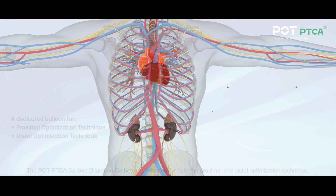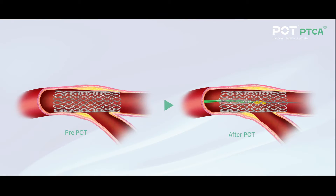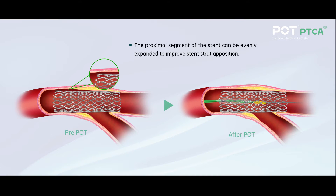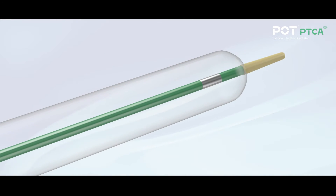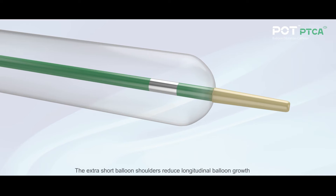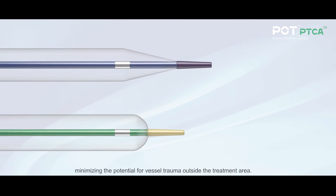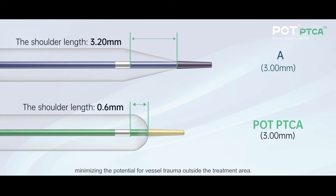The POT PTCA balloon dilatation catheter is indicated for both the proximal and distal optimization technique. The proximal segment of the stent can be evenly expanded to improve stent strut apposition. The extra short balloon shoulders reduce longitudinal balloon growth, minimizing the potential for vessel trauma outside the treatment area.